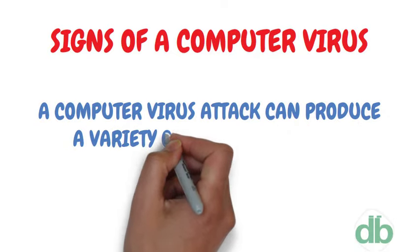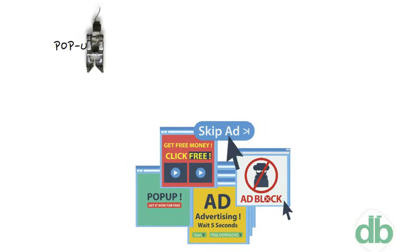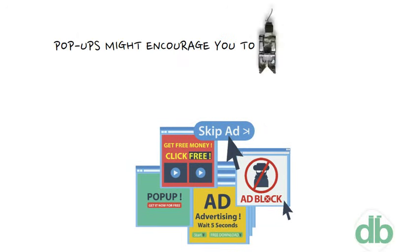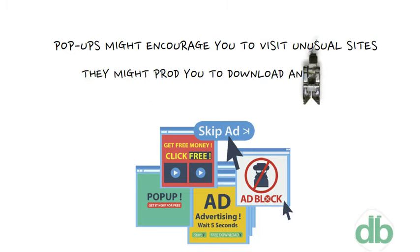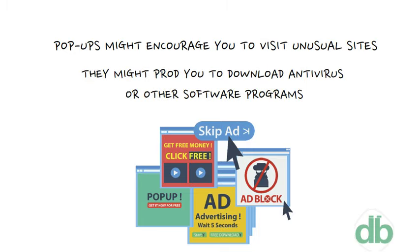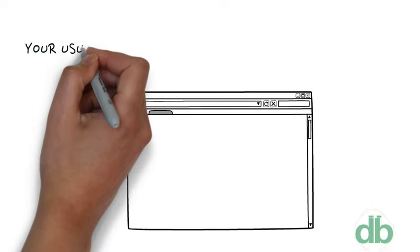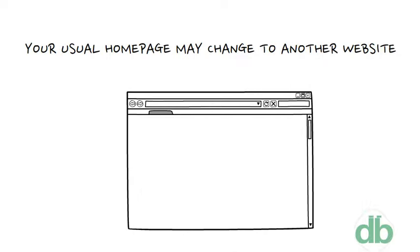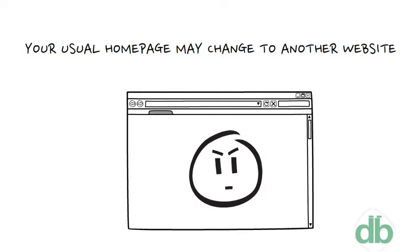Signs of a computer virus: A computer virus attack can produce a variety of symptoms. Frequent pop-up windows — pop-ups might encourage you to visit unusual sites or prompt you to download antivirus or other software programs. Changes to your home page — your usual home page may change to another website; for instance, you may be unable to reset it.